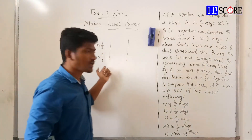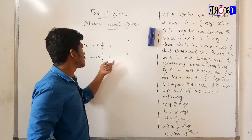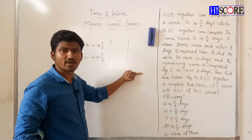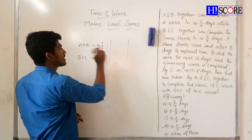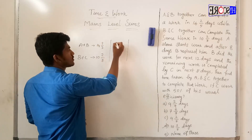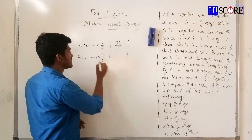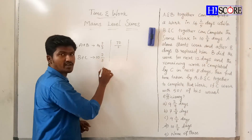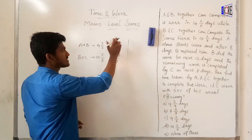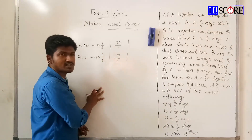We will convert the mixed fractions. 14 and 2/5 gives 72/5. Next, 10 and 2/3 gives 72/7. So A and B together take 72/5 days, and B and C together take 72/7 days. The common LCM number is 72.